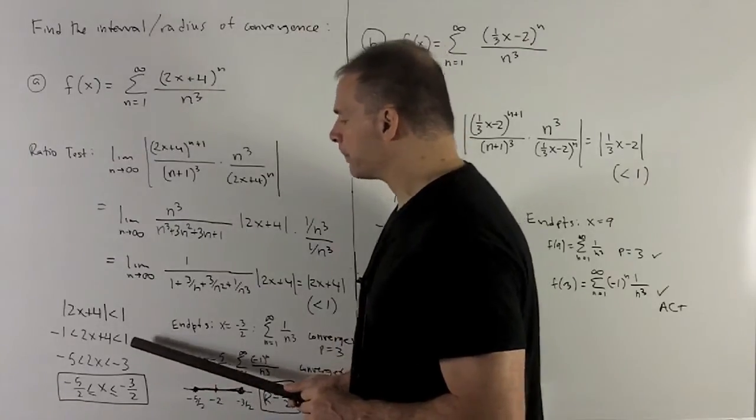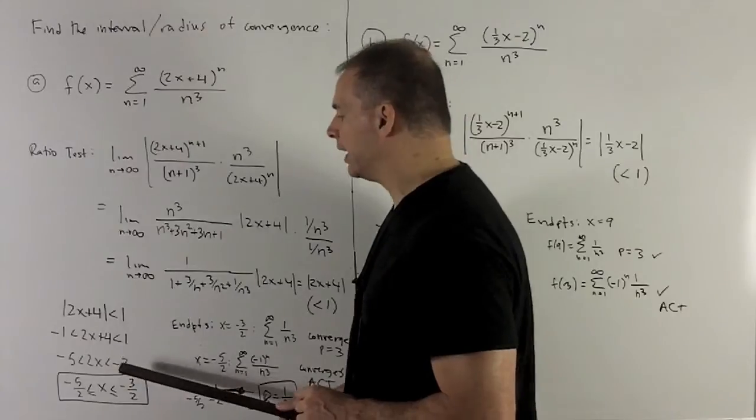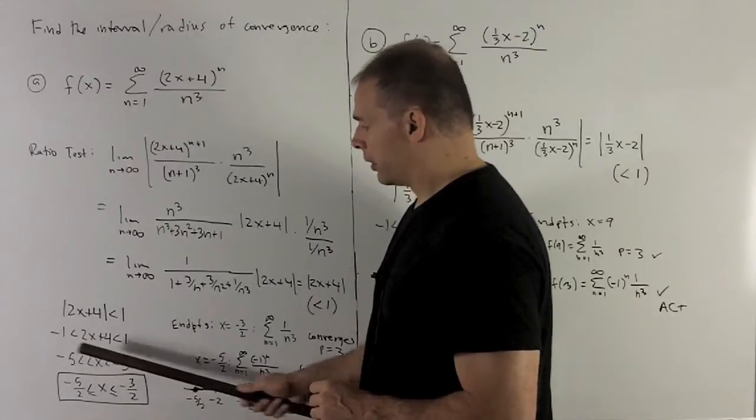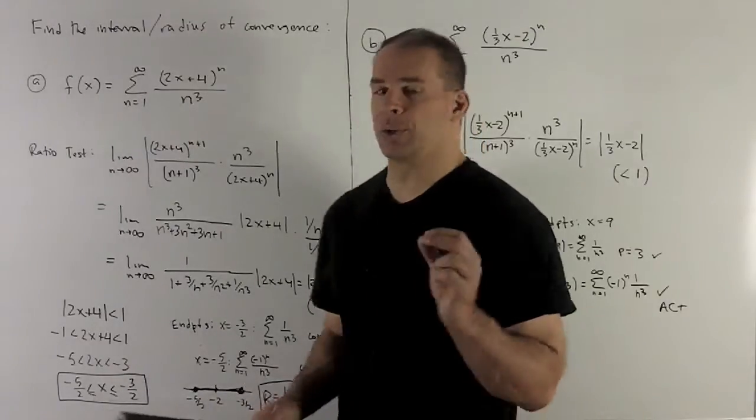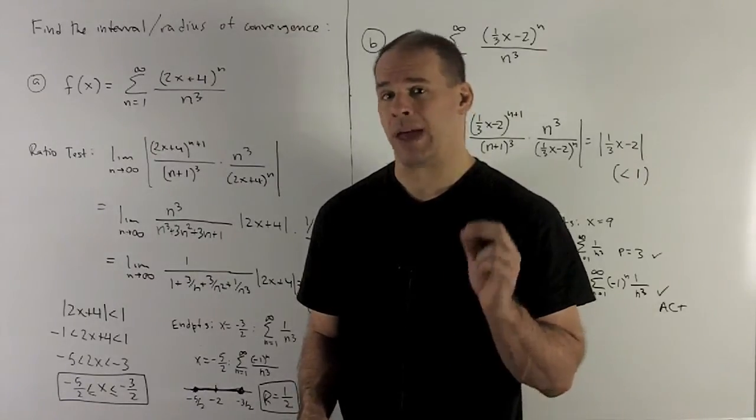I want to get rid of that 4, so I'm going to add minus 4 to everything. So I'm going to have minus 5 less than 2x, less than minus 3. And then I'm going to divide by 2 through everything. Since 2 is a positive number, multiplying or dividing with the inequalities will have no effect.